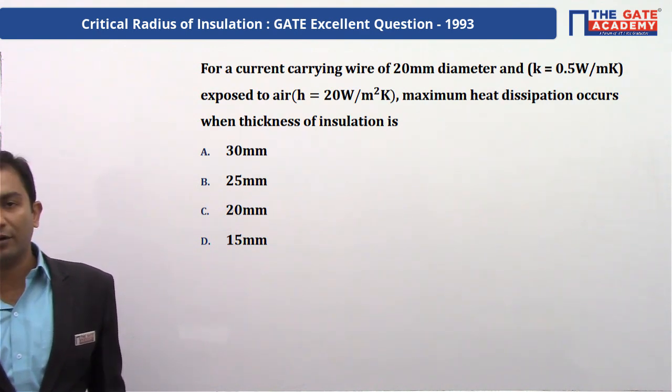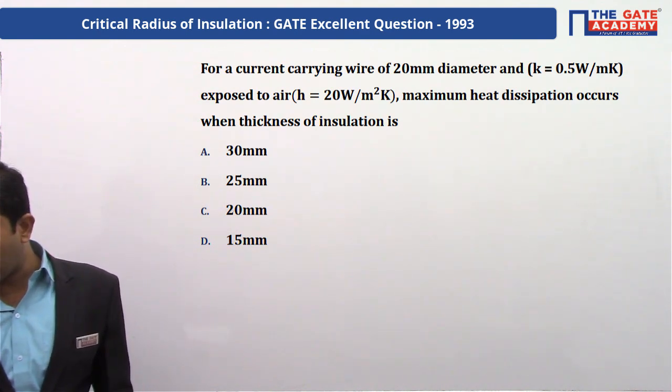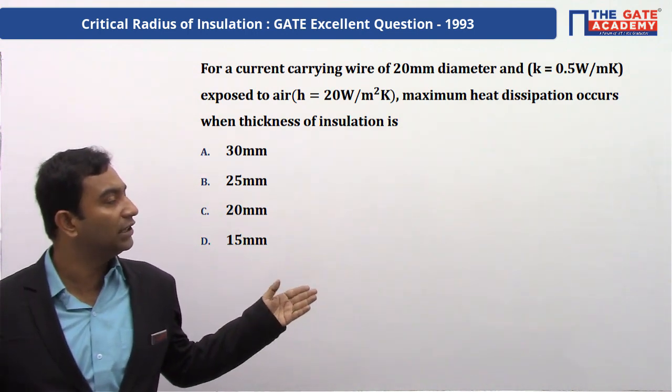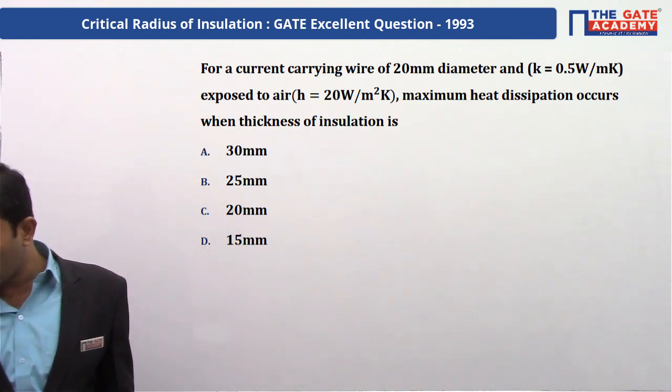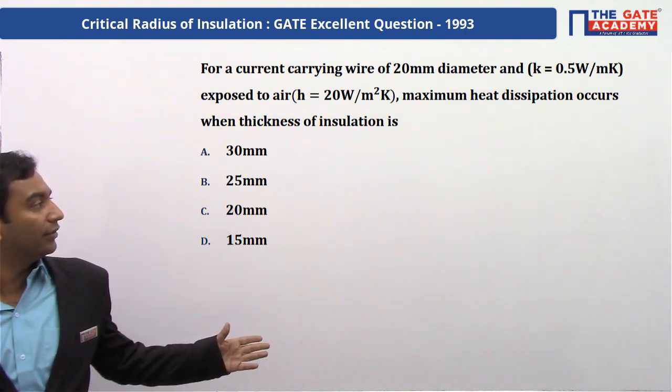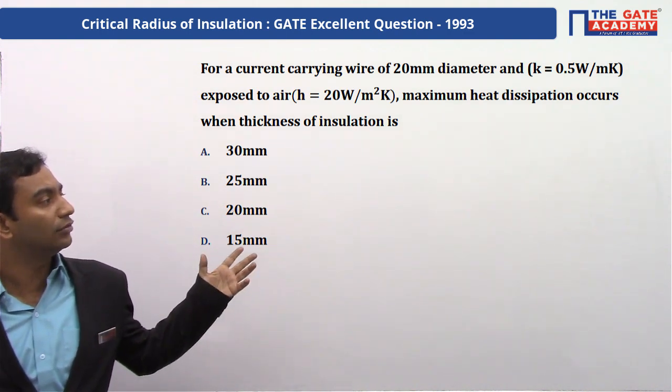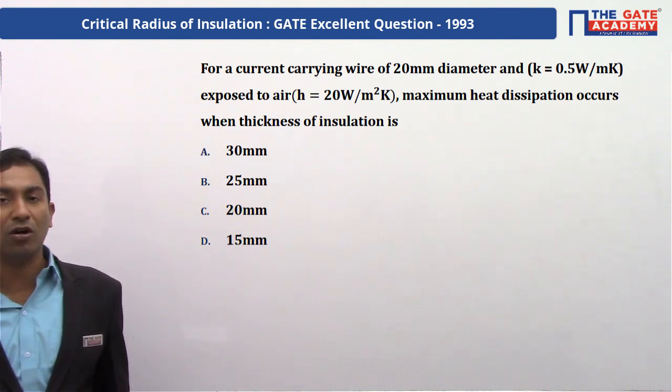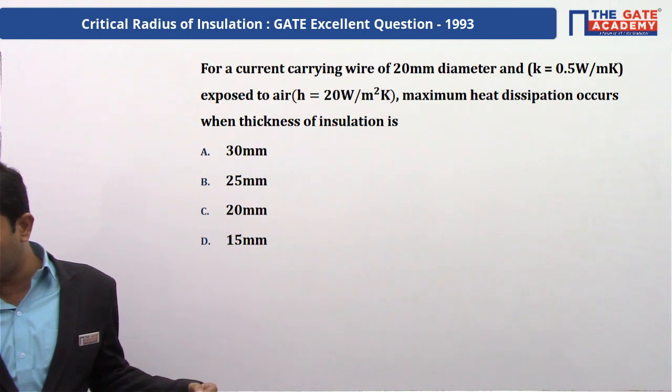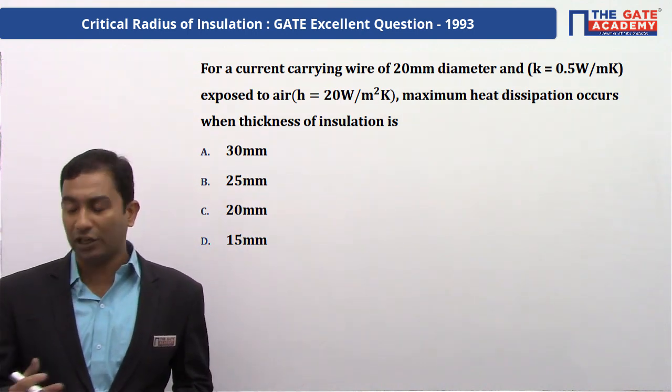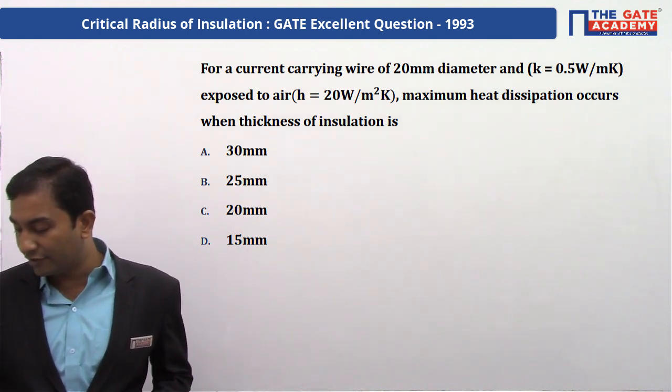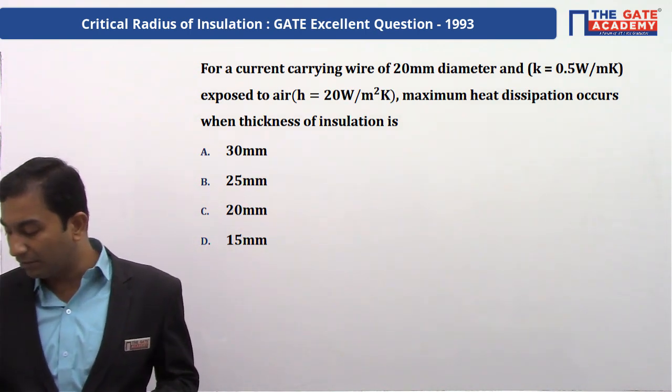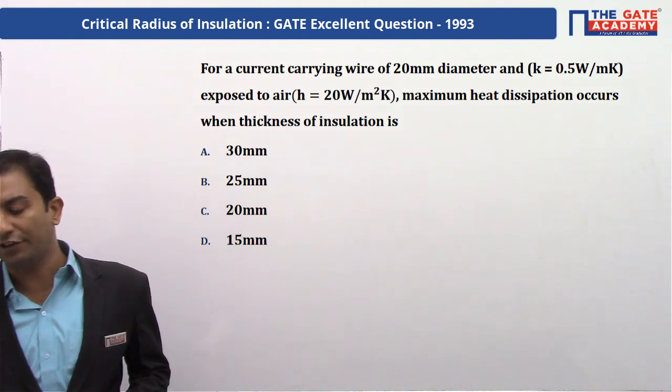For a current carrying wire of 20 mm diameter and K equals 0.5 watt per meter per Kelvin, exposed to air with H equals 20 watt per meter square per Kelvin, maximum heat dissipation occurs when thickness of insulation is. We are given options: A is 30 mm, B is 25 mm, C is 20 mm, and D is 15 mm.